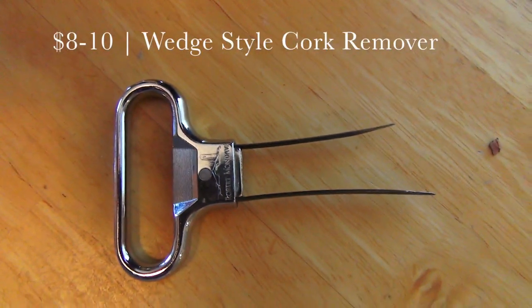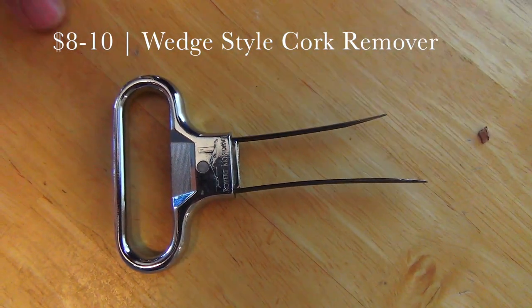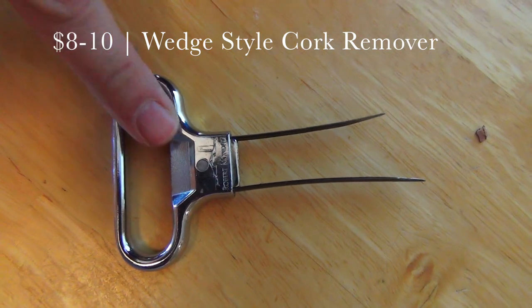There is a way to salvage that using a tool. This is what they call a wedge style bottle opener.